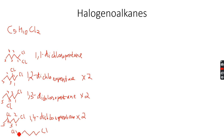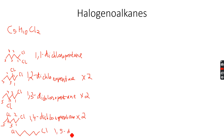In this isomer, the two chlorine atoms are on the end — one is on the first carbon atom and one is on the fifth carbon atom — so this becomes 1,5-dichloropentane. This one will not have any optical isomers because there is no chiral center.